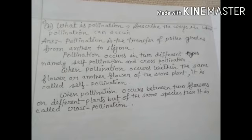When pollination occurs between two flowers on different plants but of the same species, then it is called cross-pollination.